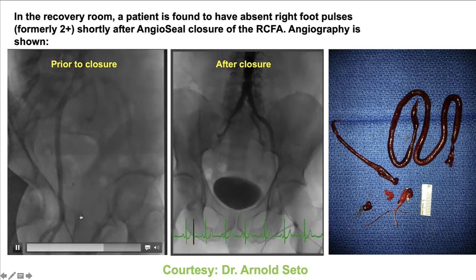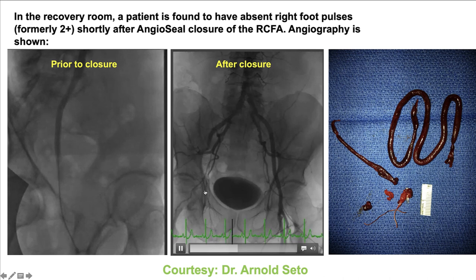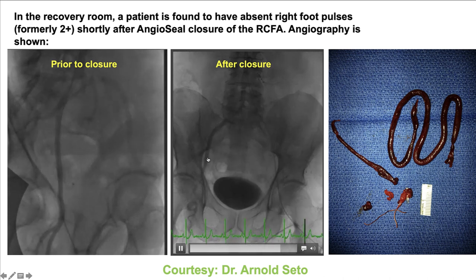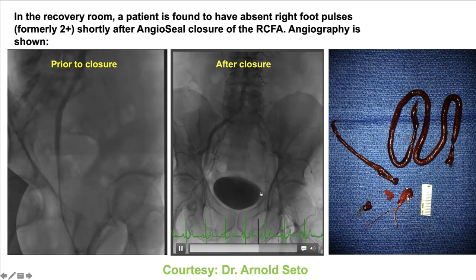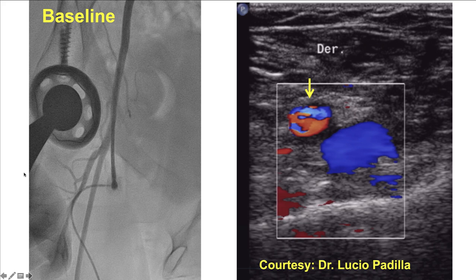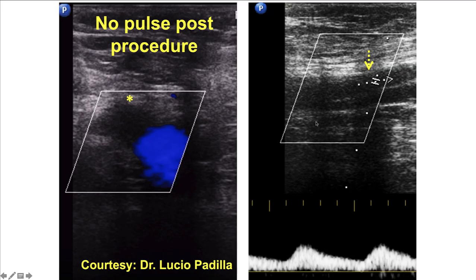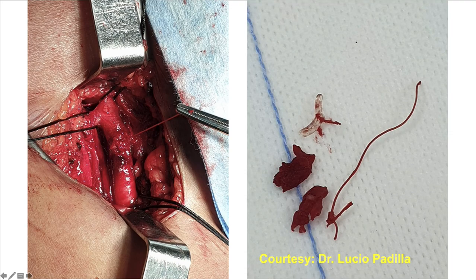This is another patient who had right common femoral access, and then an Angioseal device was used, causing loss of pulses. Angiogram demonstrated occlusion of the right common femoral artery, and surgical treatment was performed — removing the Angioseal and performing thrombectomy to successfully recanalize the common femoral artery. Another similar case involved a diffusely diseased right common femoral artery that was patent at access but lost its pulse after placement of an Angioseal, again requiring surgical repair.